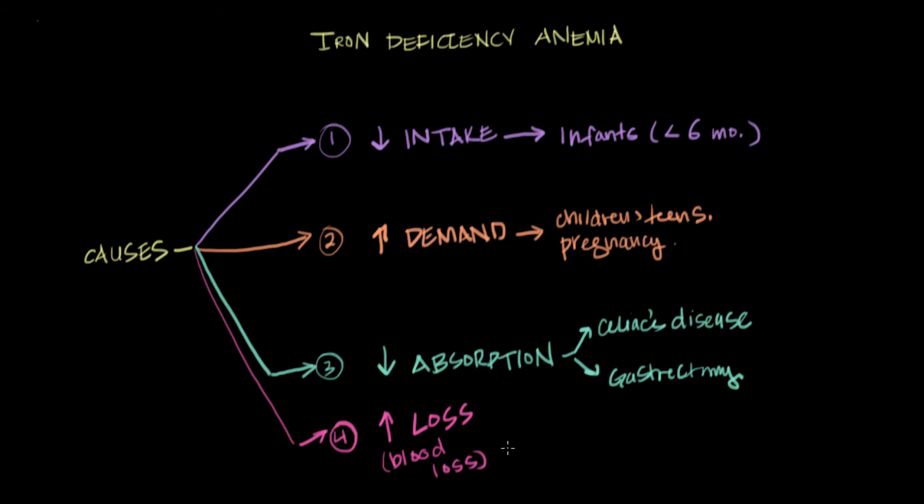Some of the more common causes of blood loss, for example, in women, in premenopausal women, include heavy menstrual flow. That's called menorrhagia.